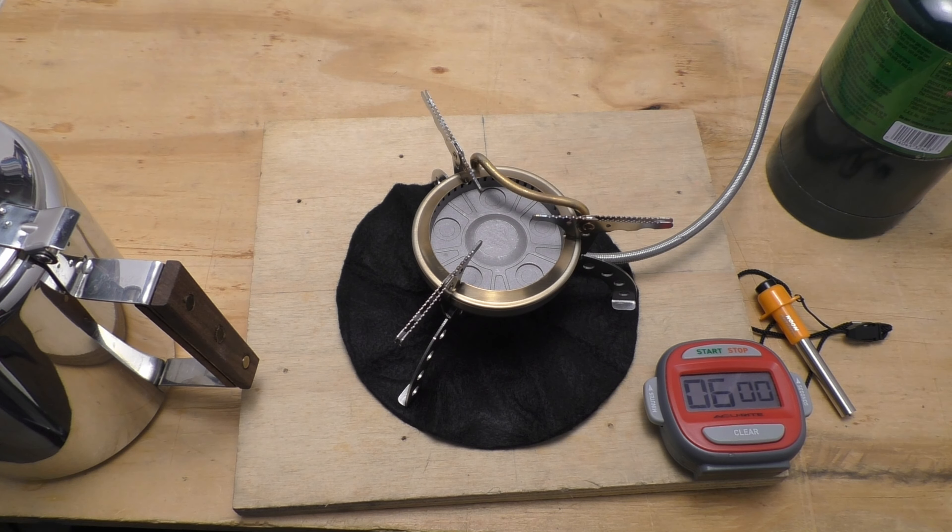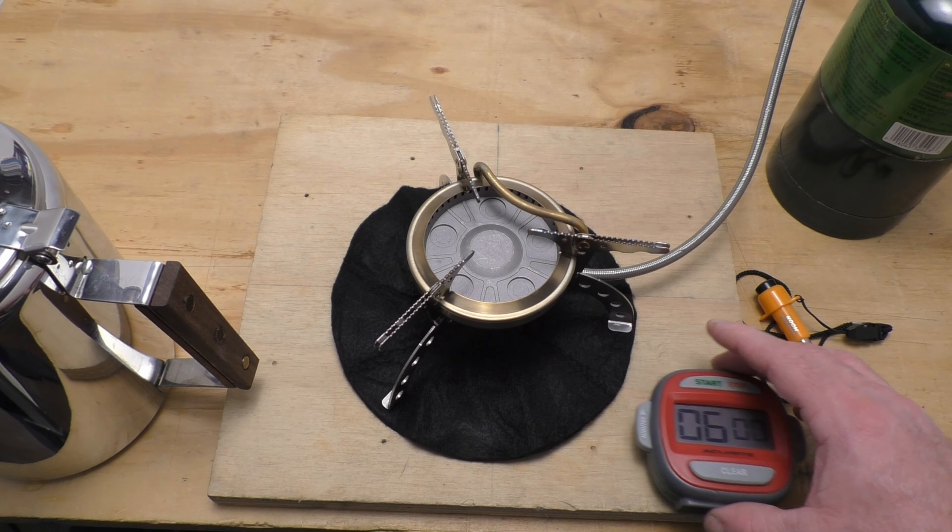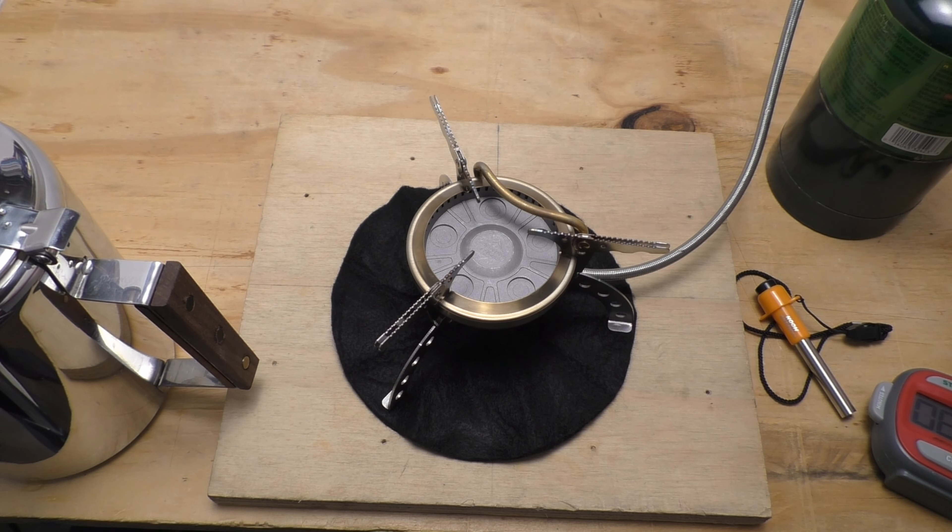If you go more than ten minutes, you're gonna end up with a bitter brew. Also you don't want to try to do dark roast in a percolator, it'll come out bitter no matter what you do. You want a medium or light roast, and this is a medium roast, so let's get this started.